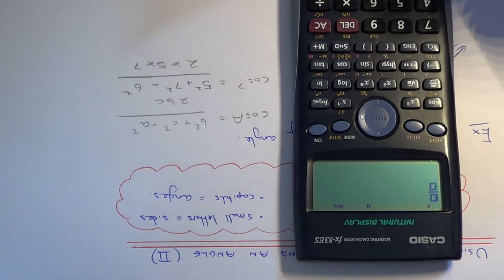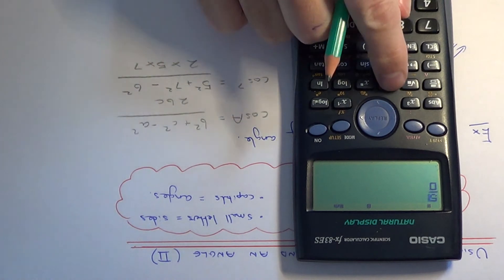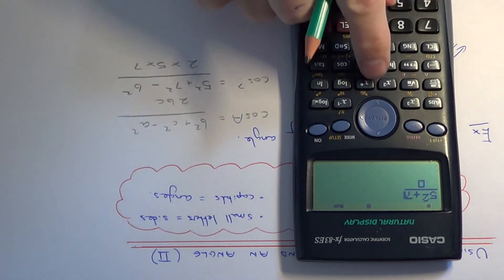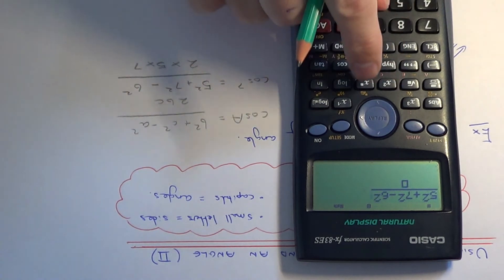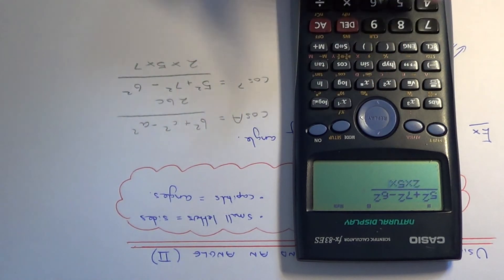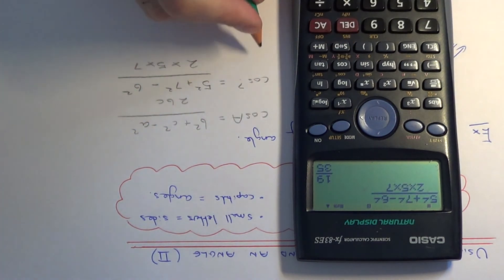So hit your fraction button. You've got 5 squared plus 7 squared minus 6 squared all divided by 2 times 5 times 7. So this gives us cos question mark equals 19 over 35.